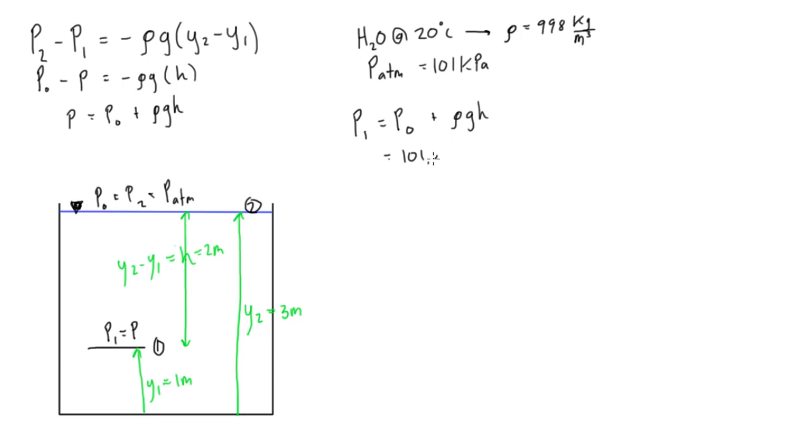So we have p0, so we have 101 thousand pascals, this is going to be plus 998 kilograms per cubic meter times acceleration due to gravity, which is 9.81 meters per second squared, times height, the h is the difference, so that's two meters. And if you go through all these units, we're actually going to find that this actually turns out to be in pascals. So we get 101 thousand pascals, plus we're going to get 19,580 pascals, and when you add these two together, we're going to get about 120.58 kilopascals. There we go, so we're saying the pressure right here is 120 kilopascals, and that makes sense, because it has to be higher than the atmospheric pressure, because it's going to be the weight of this water kind of pushing down on it as well.